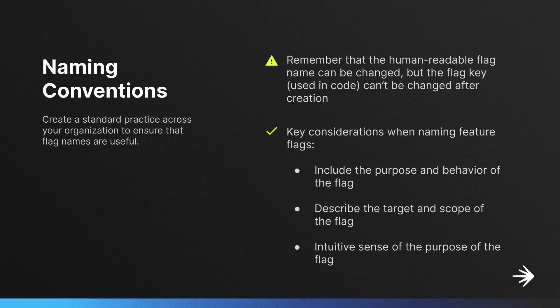Key considerations when naming feature flags include purpose and behavior of the flag, and target and scope of the flag. A good naming convention makes it so that both developers and other users in the platform can look at a flag and intuitively understand the purpose, and be able to look at the description and easily understand the scope of the flag. It's also important to note that while the name of the flag in the platform can be changed after creation, the flag key that will be used in code is static and cannot be changed or duplicated.